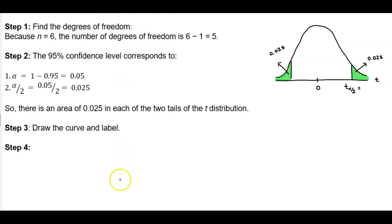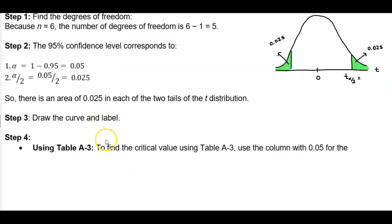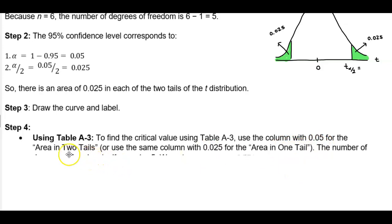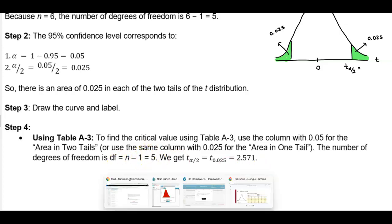In step 4, if we're using Table A.3 to find the critical value, we use the column with 0.05 for the area in two tails, or we use the same column with 0.025 for the area in one tail. And the number of degrees of freedom is 5. So let's go ahead and open this up.